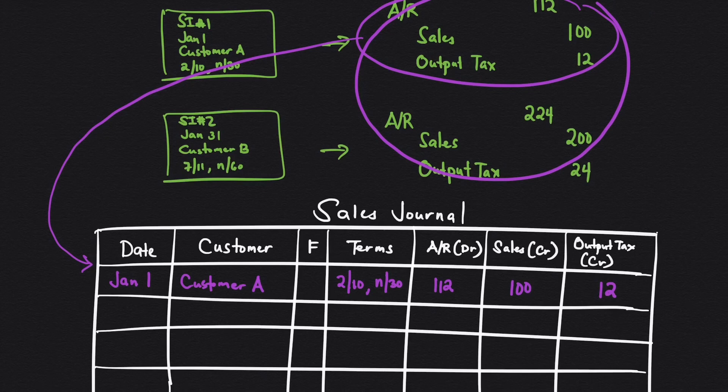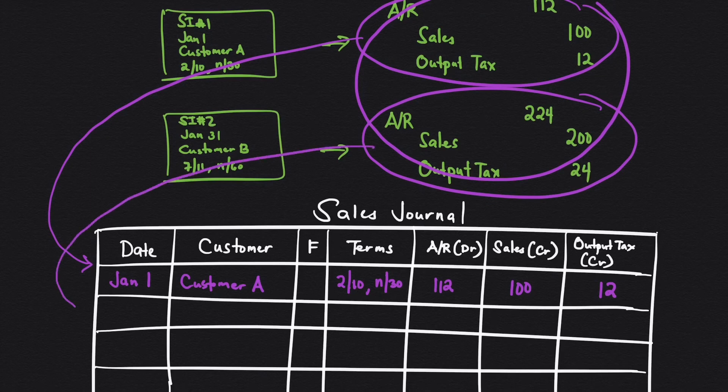For the next transaction, this one, I will place it here. This is dated January 31 and is for customer B. For the F, let's skip. For terms, 3/11, n/60. And then for the amounts, we have 224, 200, and 24.